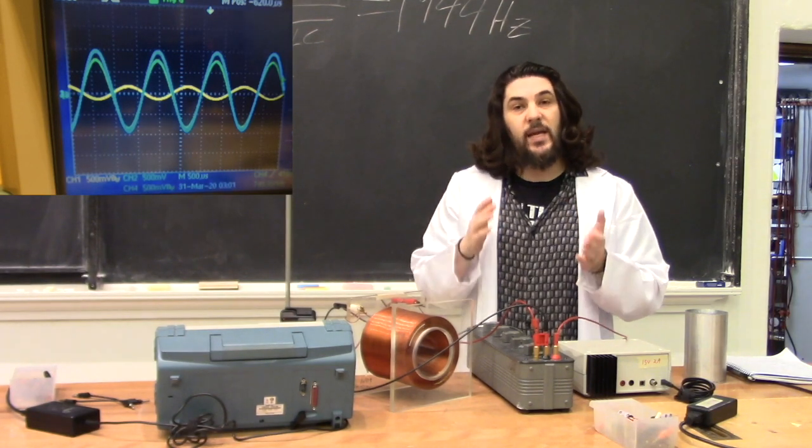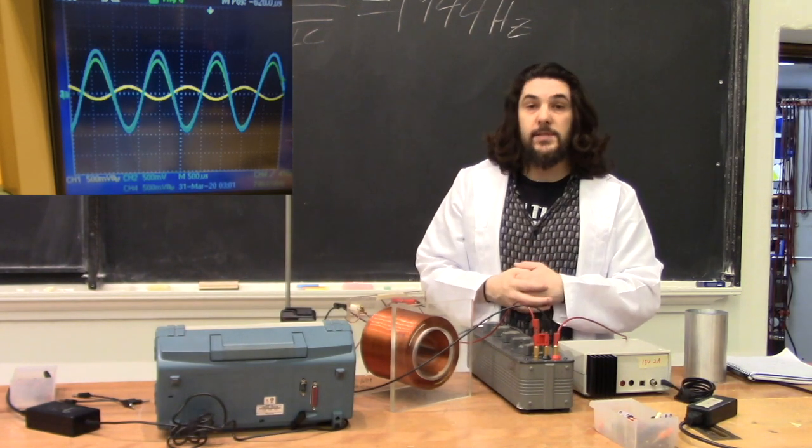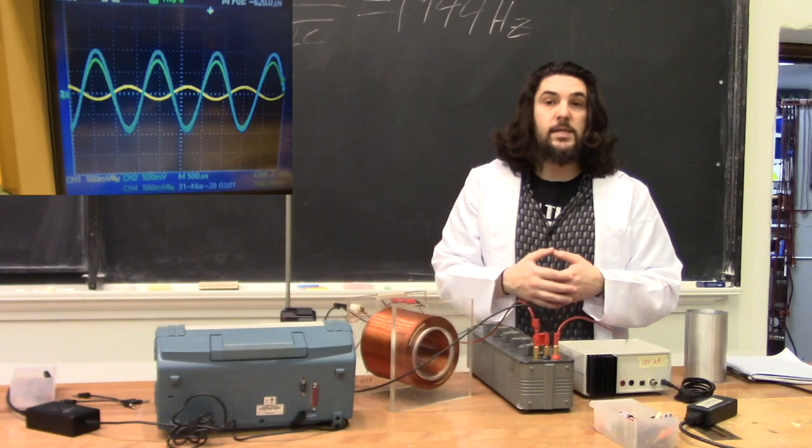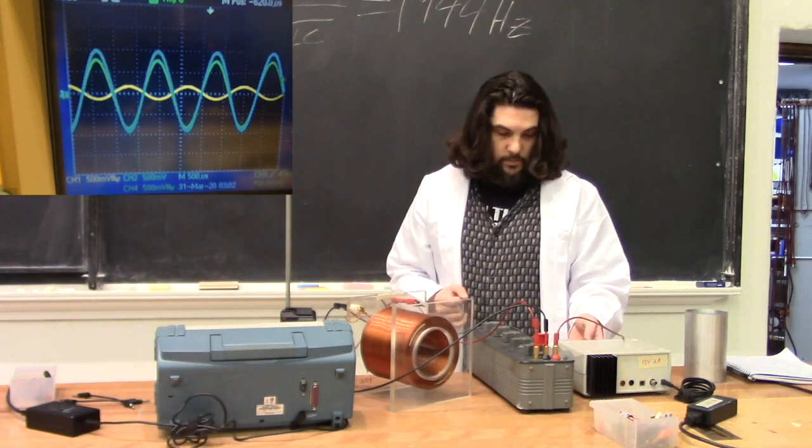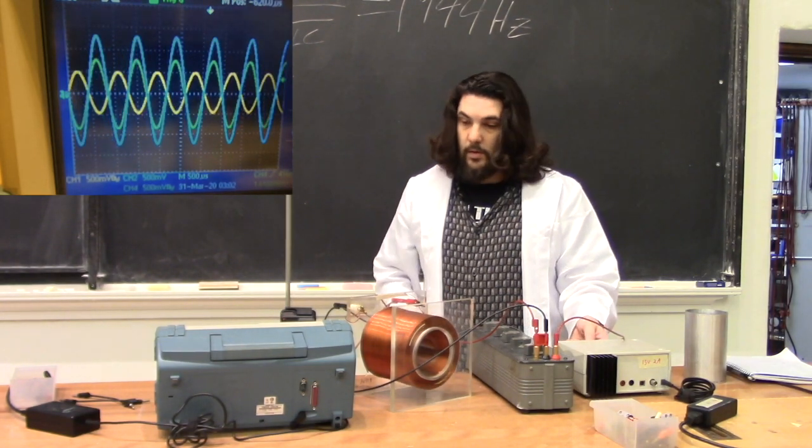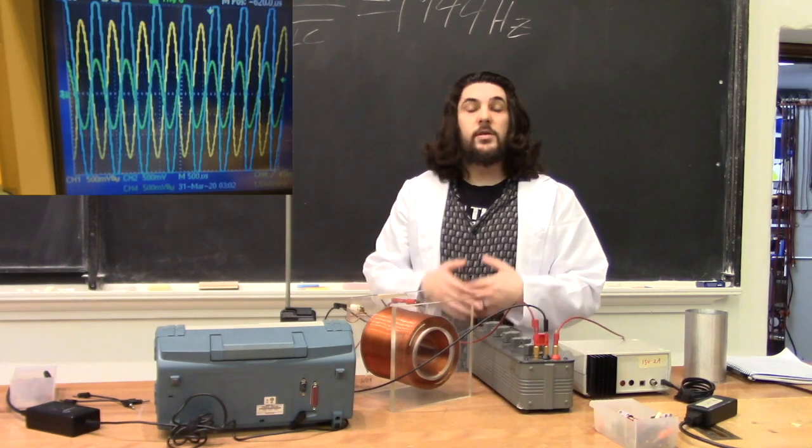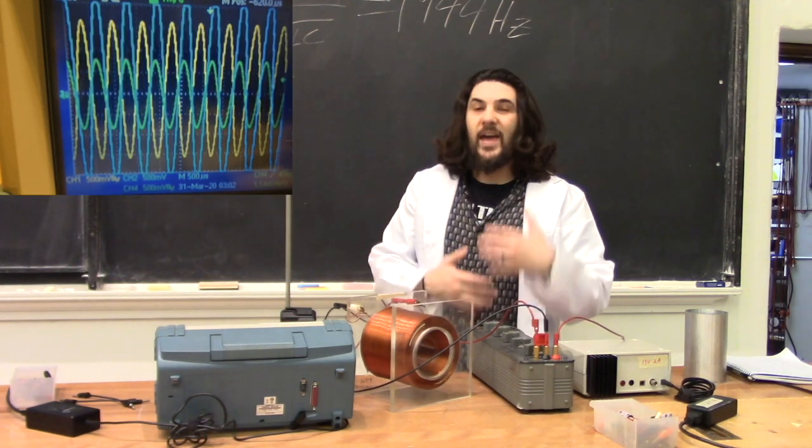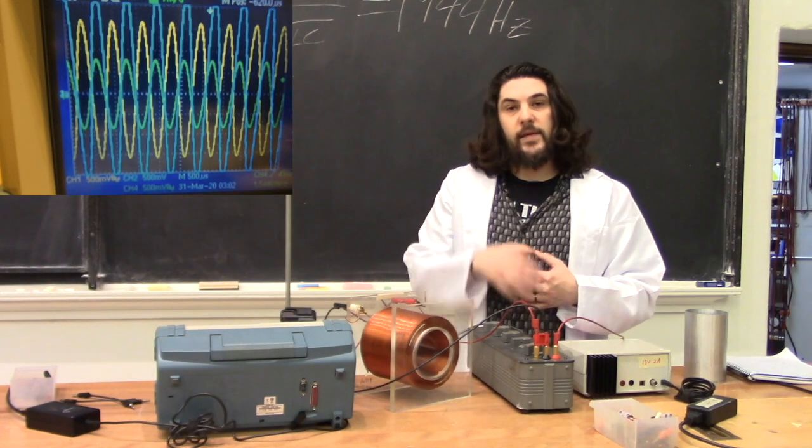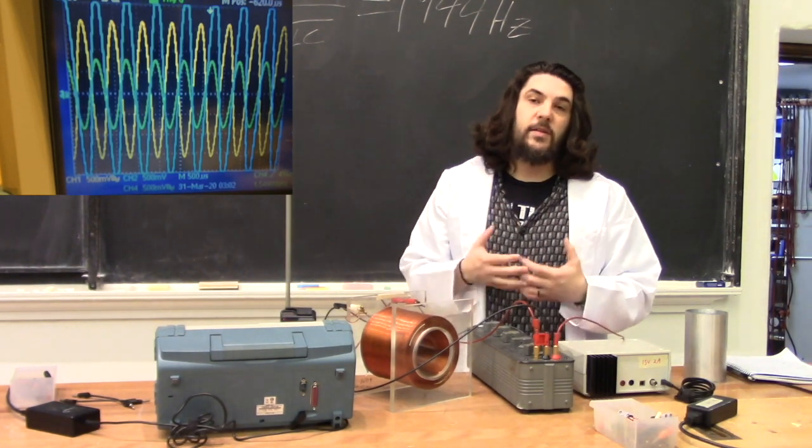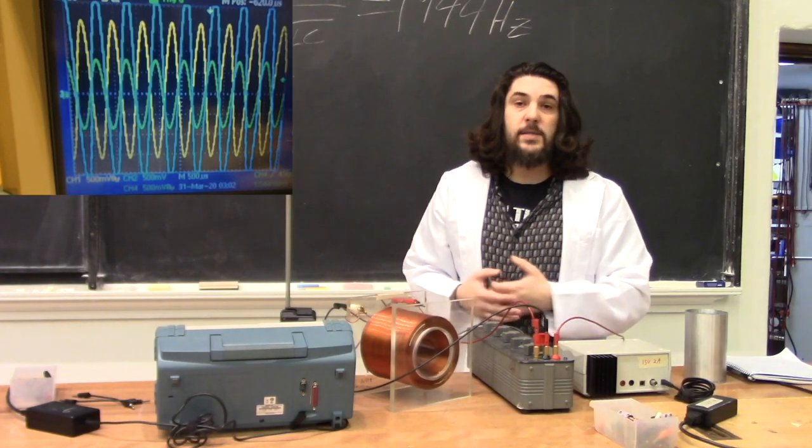It blocks any voltage from getting past it, and it takes all the voltage for itself. At high frequencies, it allows the voltage to go through. As we raise the frequency, you can see the voltage of the capacitor and the inductor both rise, as they're sending current back and forth between each other, and it has very little time to get absorbed by the resistance.